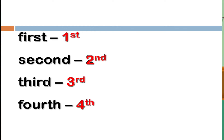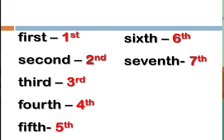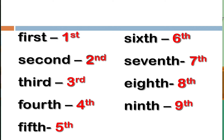Fourth — we write the symbol as 4th and read it as fourth. Fifth — we write the symbol as 5th and read it as fifth. Sixth — we write the symbol as 6th and read it as sixth. Seventh — 7th and read it as seventh. Eighth — we write this as 8th and read it as eighth. Ninth — 9th, read as ninth. Tenth — 10th, read as tenth.